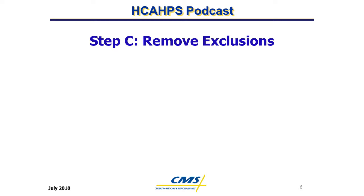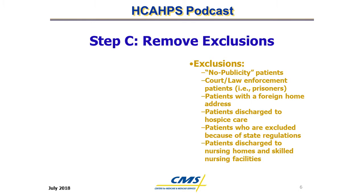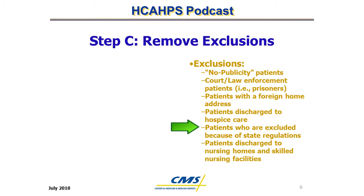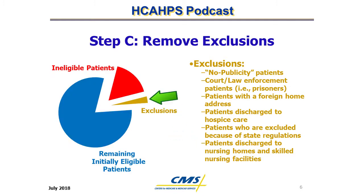Step C: Remove Exclusions. Patients who meet the initially eligible criteria are then reviewed for the following exclusion categories: no publicity, court or law enforcement, foreign home address, discharge to hospice care, state regulations, and discharge to nursing homes and skilled nursing facilities. The yellow slice of the circle indicates patients excluded for these reasons, leaving the remaining initially eligible patients in the blue slice.